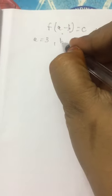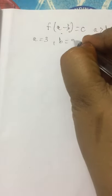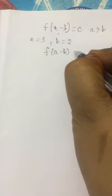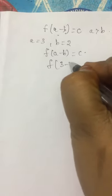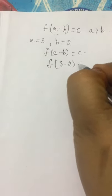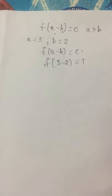Consider two values for a and b. a is equal to 3, b is equal to 2. So f(a - b), that is f(3 - 2), is equal to 1.